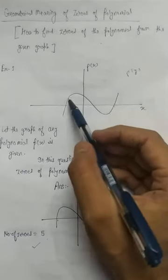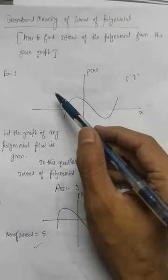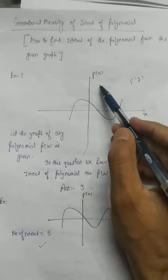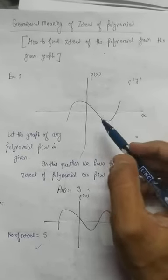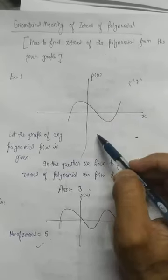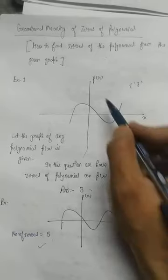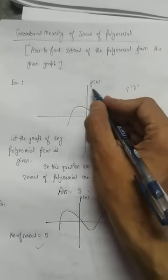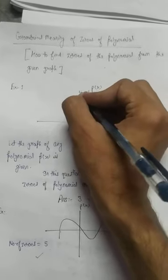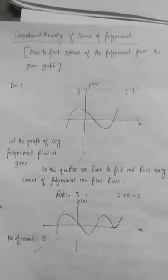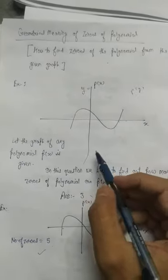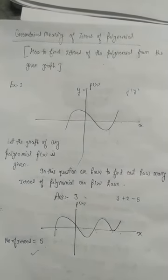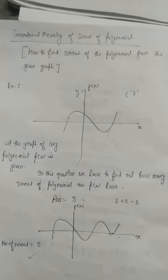Now suppose any polynomial p(x) is given and its graph is given. p(x) means the polynomial in variable x, and the graph of p(x) is given. We know that there is an x-axis and a y-axis, so x is here and y-axis will be equal to y = p(x). By observing the graph we will find how many zeros p(x) can have.